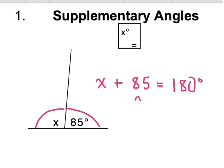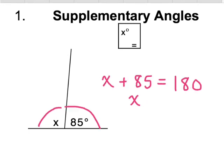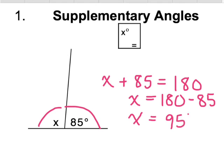So we want to subtract 85 from 180 to find the unknown angle. Solving for X, we get 95 degrees. Supplementary angles form a half circle and the two angles are on a straight line which equals 180 degrees.